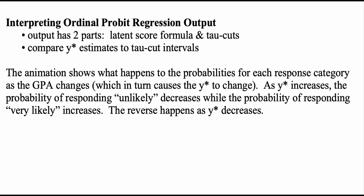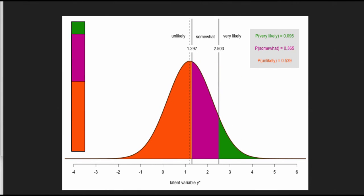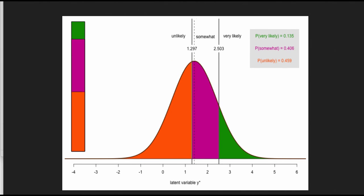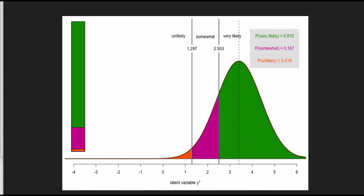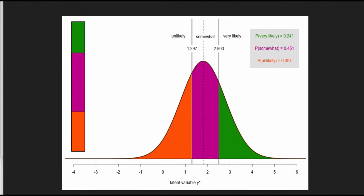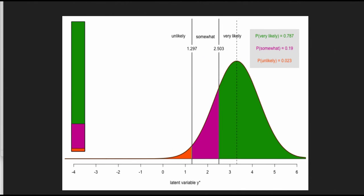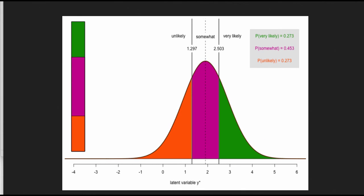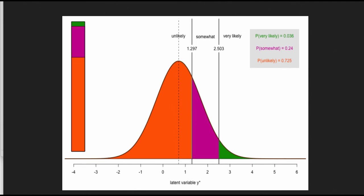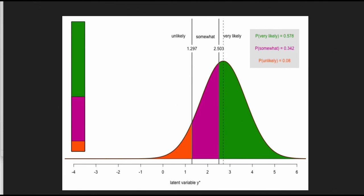Next, we look at what happens to the predicted values as independent variables change. An animation shows how the probability for each response category shifts as GPA changes. As GPA increases, the latent variable y* increases. The center of the bell curve moves from the very likely region through somewhat likely down to unlikely, and as GPA decreases, the probability of responding unlikely increases, whereas as GPA increases, the probability of responding very likely increases.